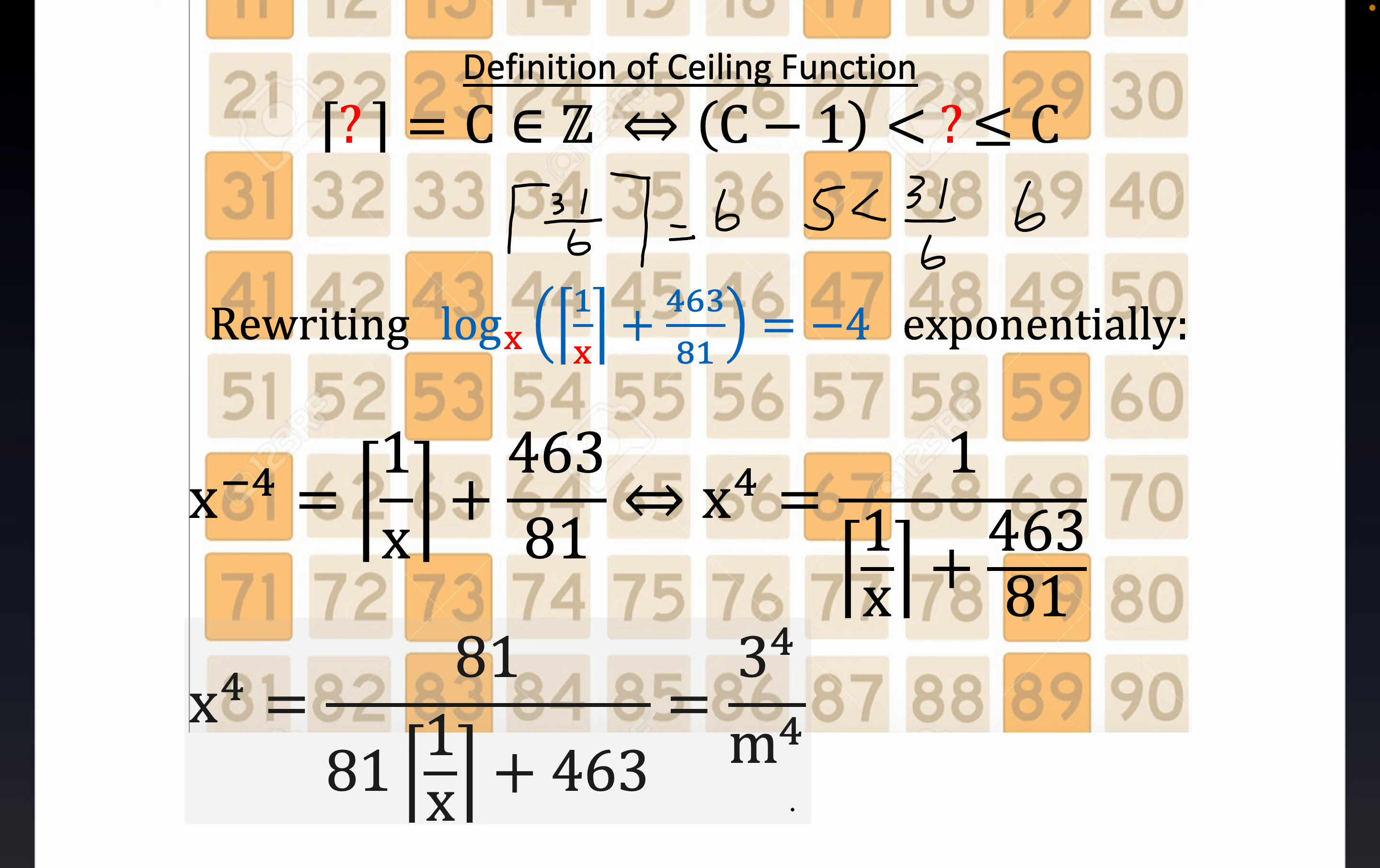Now notice we finally get to the point where we have to appeal to the fact, remember x is a rational number, and I should have said a non-integer rational number, although I think that just comes out in the wash. So for this to have a solution, the numerator has to equal 3 to the 4th, which is 81. Notice 463 is not even divisible by 3, which helps out here. And it's over m to the 4th, where m is some integer, some natural number, positive integer. This is true because if you try to take the 4th root of anything but a 4th power, you're going to get an irrational number.